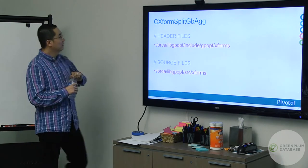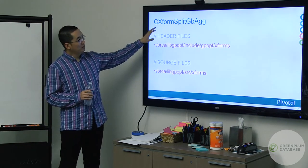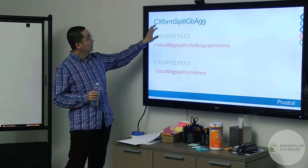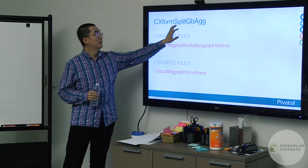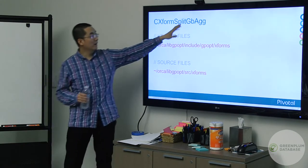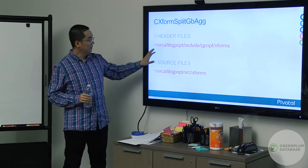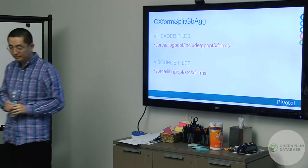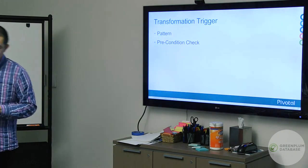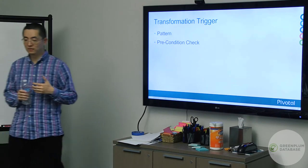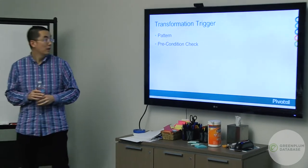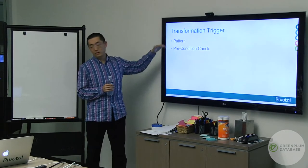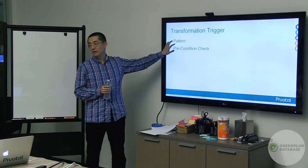Every rule in GP-ORCA is encapsulated in its own class. We'll introduce a new class called CTransformSplitGbAgg (group-by aggregate). All header files go under gpopt/include, and sources go under src. In order to trigger the transformation, we need two parts: first, I need to identify where to trigger it — that is the pattern matching part — and second, when to trigger it — that is the precondition check.